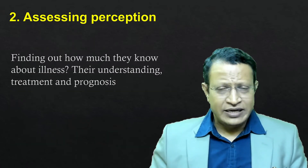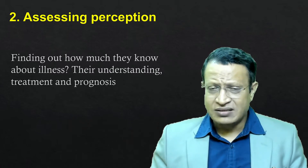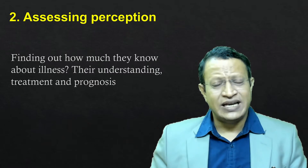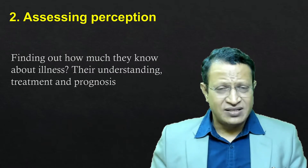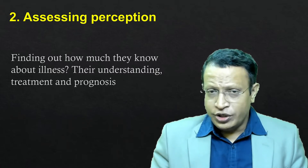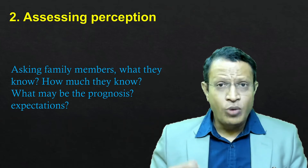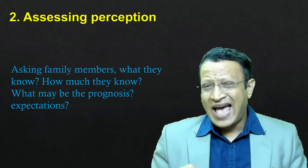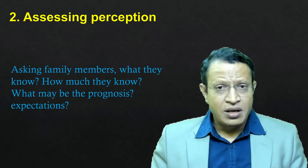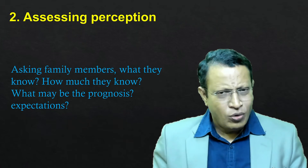Assessing the perception: talk to the family members and ask what they think about the patient's condition, what may have happened, and check their understanding of the prognosis of the illness. This slowly gives an indication about the probable bad news which is going to be given to them. Ask the family members what they know, how much they know, and what they think the prognosis may be — because invariably patients and family members would have done their homework by googling and using various search engines. So they would have known to some extent.